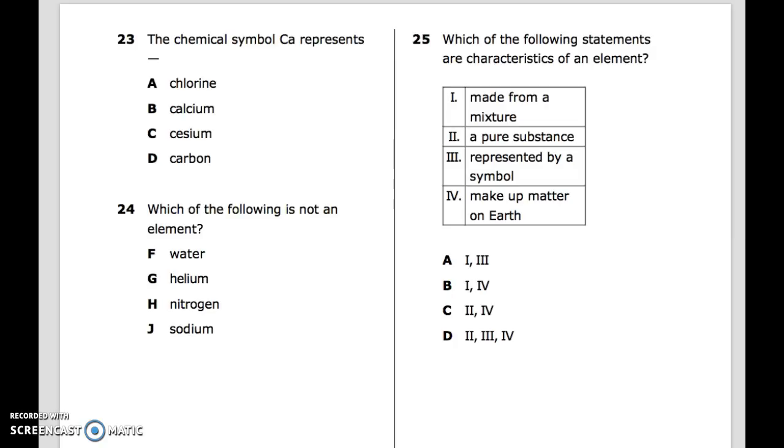24: Which of the following is not an element? F. Water. G. Helium. H. Nitrogen. J. Sodium. Question 25: Which of the following statements are characteristics of an element? 1. Made from a mixture. 2. A pure substance. 3. Represented by a symbol. 4. Make up matter on earth.